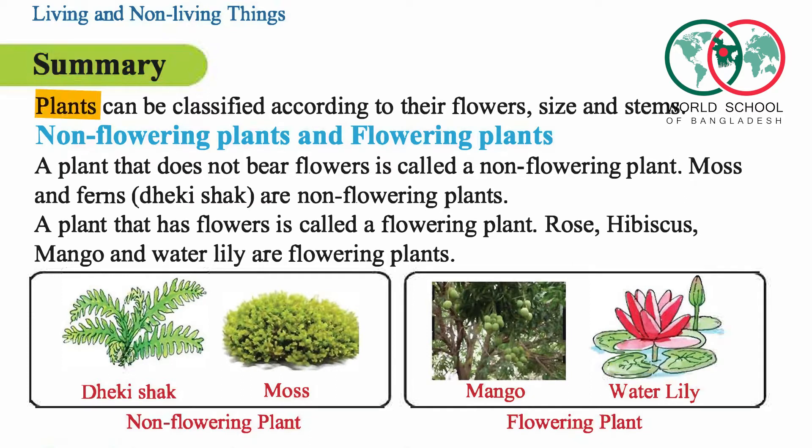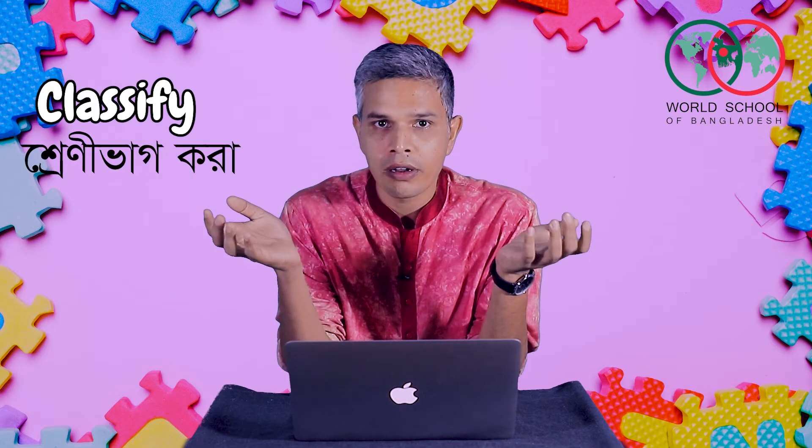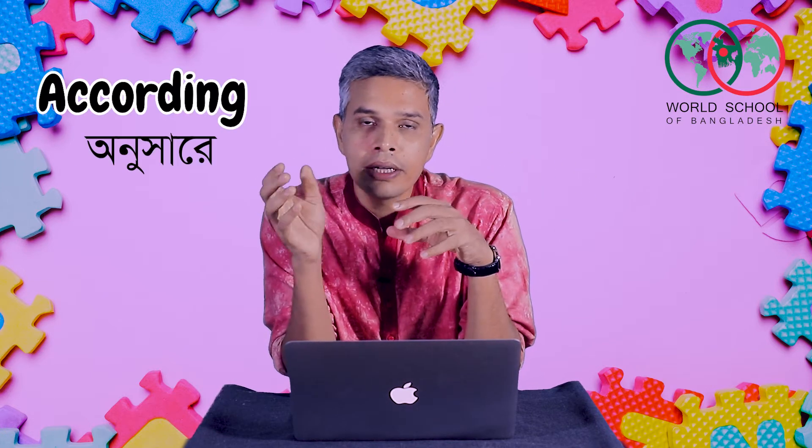Plants can be classified according to their flowers, size and stem. Classified means to be grouped. Plants can be classified according to their flowers — whether they have flowers or not — and also by their size.